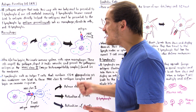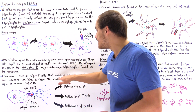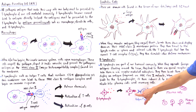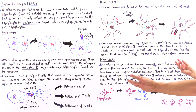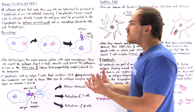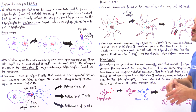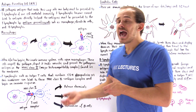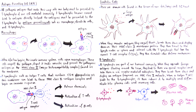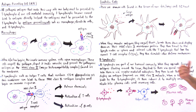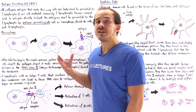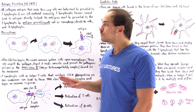Only then can a T lymphocyte with the CD4 glycoprotein bind onto this MHC class II complex containing our antigen. Once this binding takes place, it ultimately stimulates the B lymphocyte to undergo mitosis and divide many times, differentiating into two different types of cells: plasma cells, which produce antibodies found in our blood and lymph system, and memory B cells that are involved if reinfection ever actually takes place.